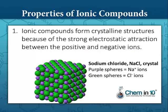Ionic compounds form crystalline structures because of the strong electrostatic attraction between the positive and negative ions. Remember, opposite charges attract. Here we have a sodium chloride crystal — the purple spheres are the sodium ions and the green spheres are the chloride ions.